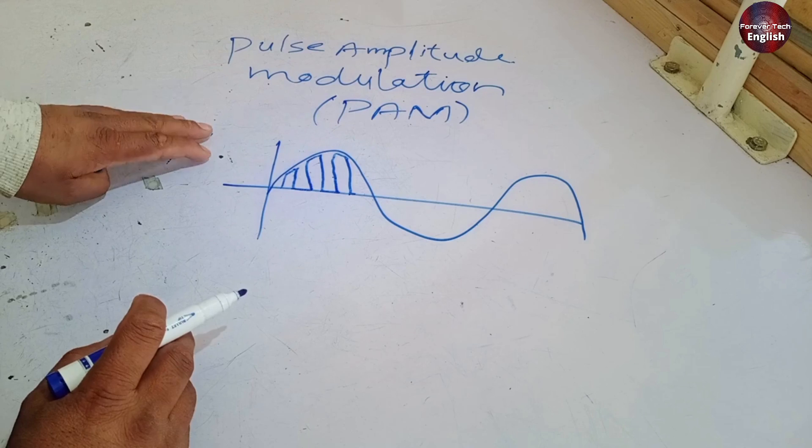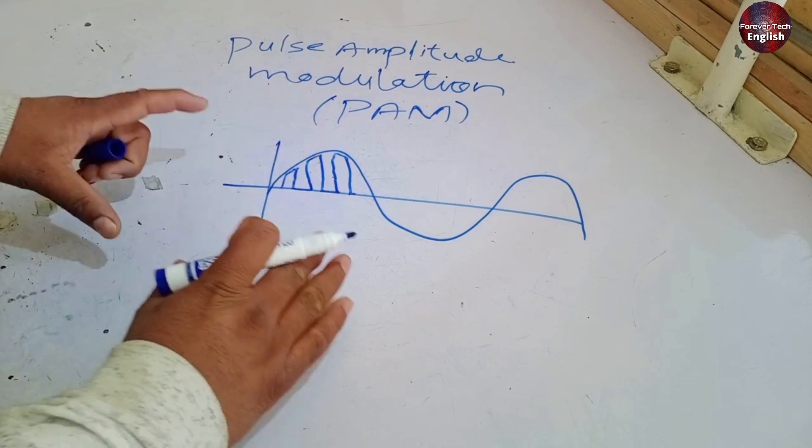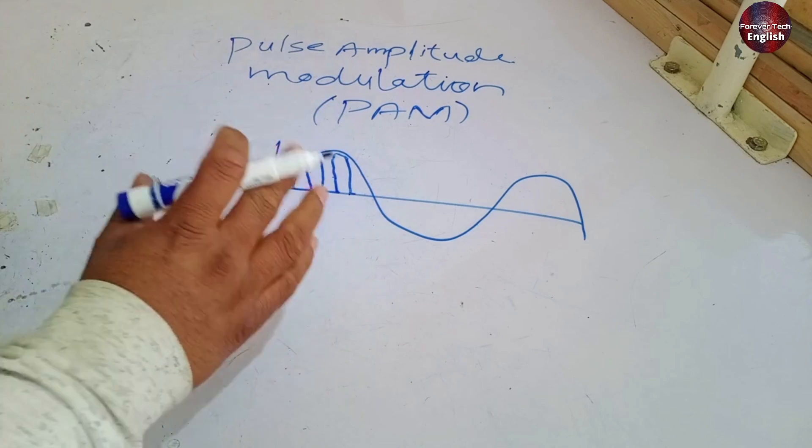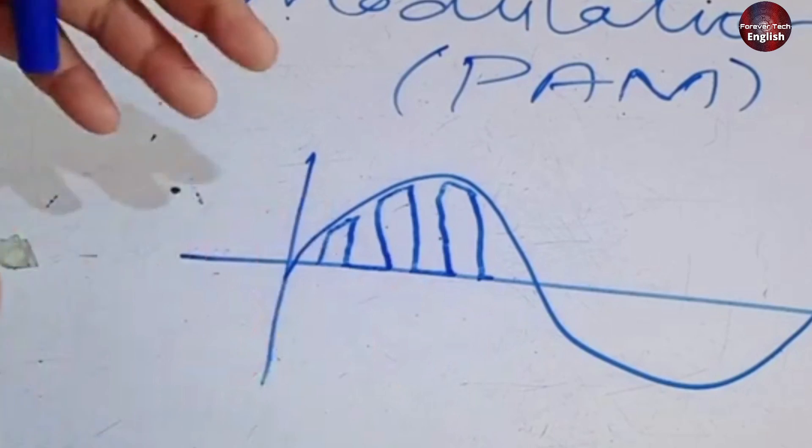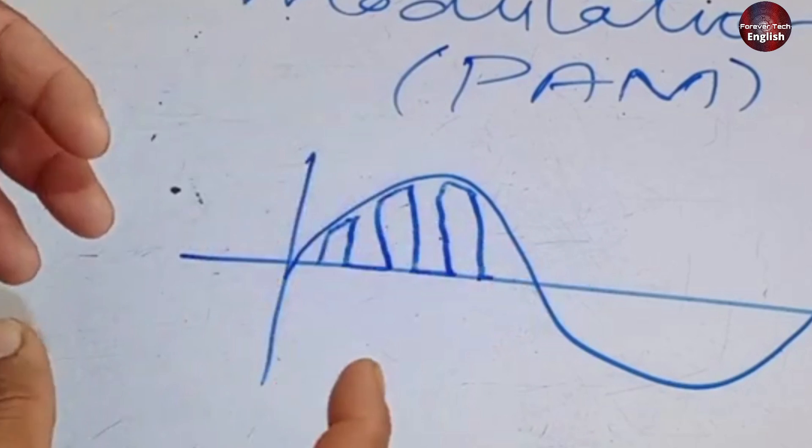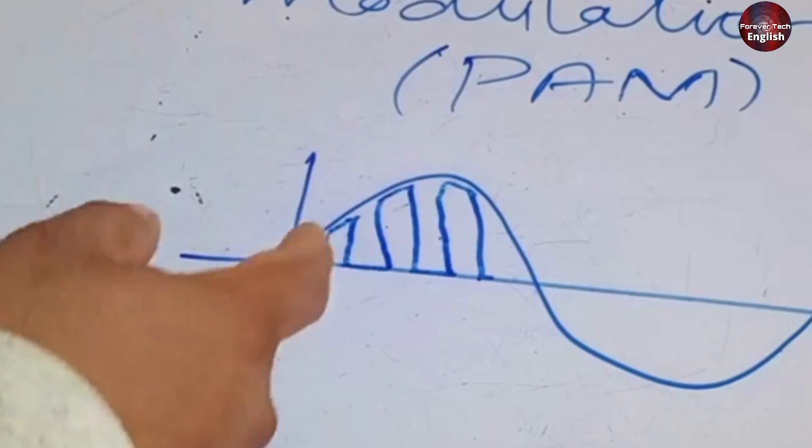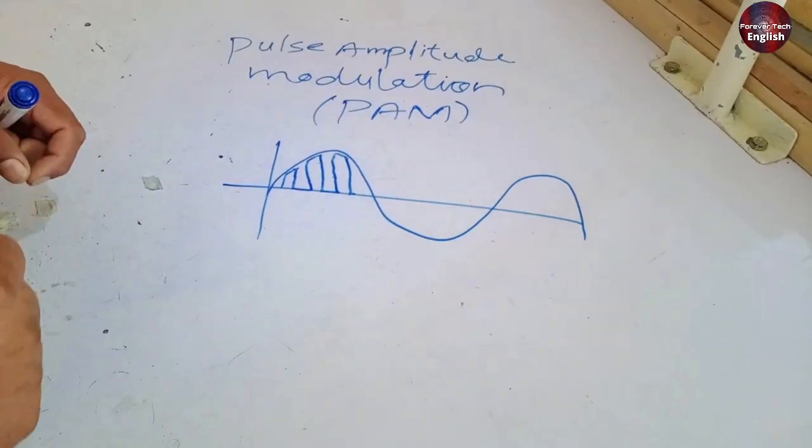The reason we use two rectifiers is to control the current, which improves the power factor. When the power factor is good, the compressor runs better, has a longer life, and the current flow helps it run more efficiently. So these two rectifiers are used specifically for controlling the current.